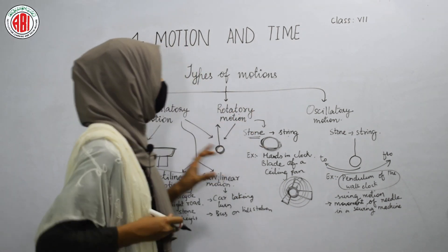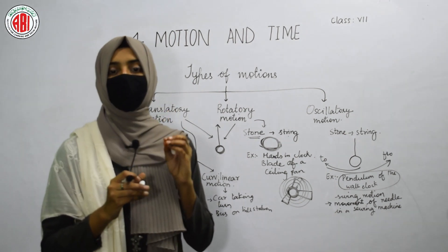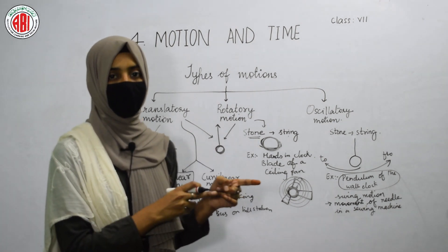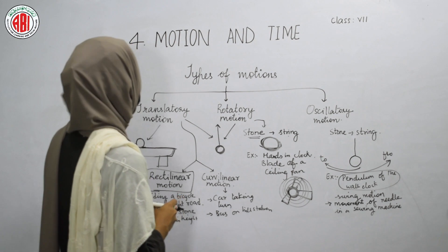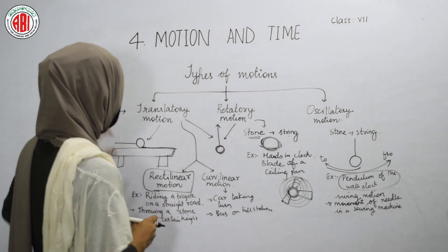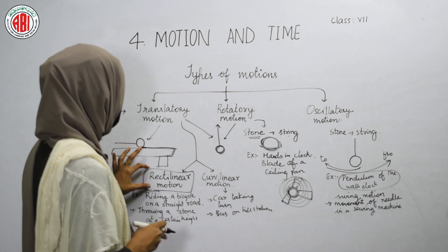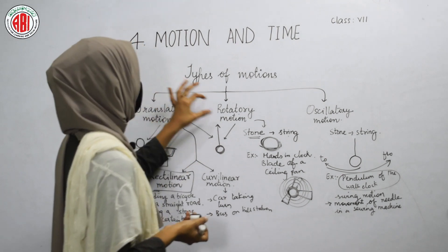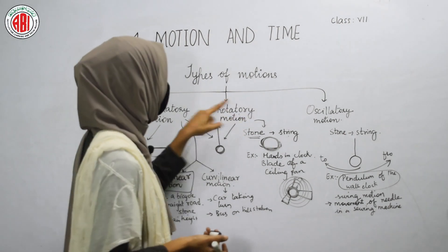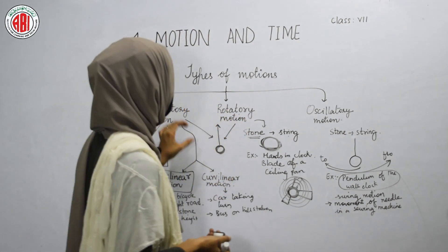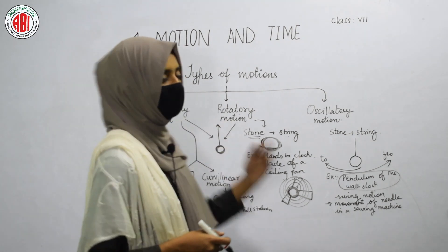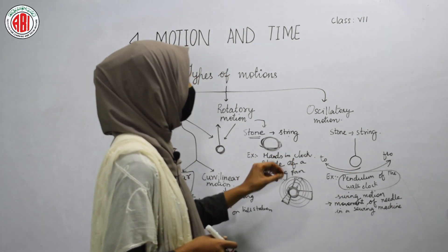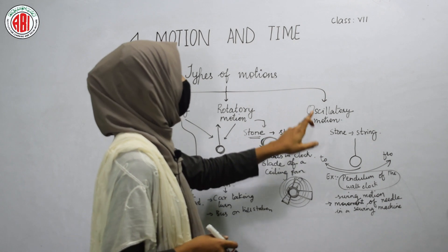So, the different types of motion are: translatory motion, where all the particles of an object move in the direction of motion. If the object moves along a straight path, that is rectilinear motion; if it moves along a curved path, that is curvilinear motion. An object moving in a circular path shows rotatory motion. If the object moves backward or forward, upwards or downwards, or to and fro along a fixed path, that is oscillatory motion.